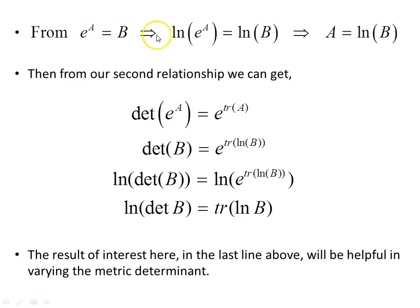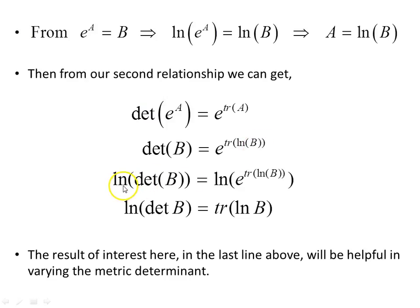From e to the A equals B, taking the natural log of both sides gives A equals log of B. From our second relationship, the determinant of e to the A equals e to the trace of A, so the determinant of B equals e to the trace of log B, replacing e to the A with B and A with log B. Taking the natural log of both sides: log of the determinant of B equals log of e to the trace of log B. Since log and exponentiation are inverses, the natural log of the determinant of B equals the trace of log B. This result will be very useful when varying the metric later.